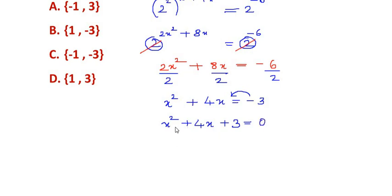Now we can factorize this by using the splitting the middle term method. So we can write x² + 3x + 1x + 3 equals 0. So 3 and 1 are the factors of 3, and when we add them we get the sum of the equation which is 4.